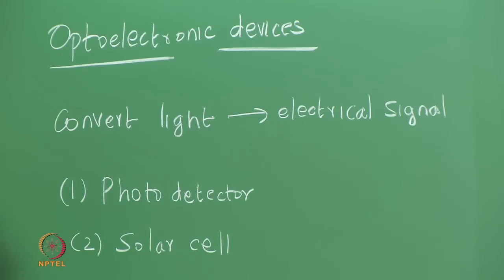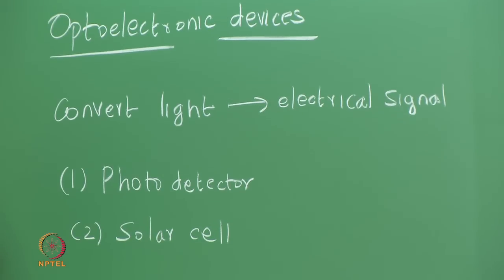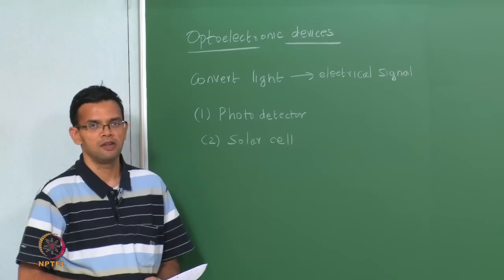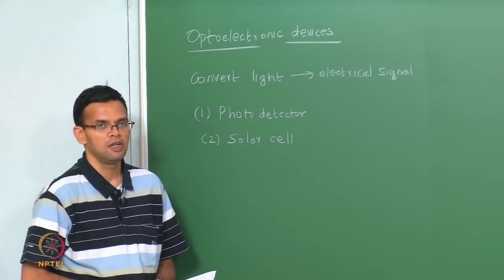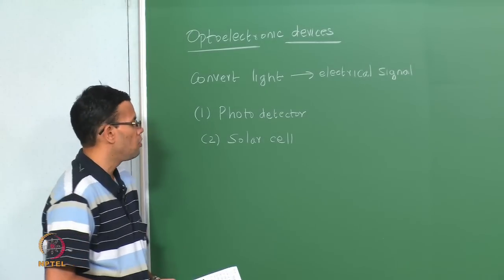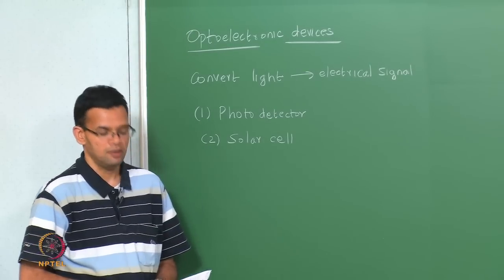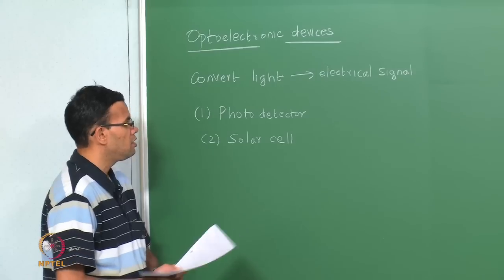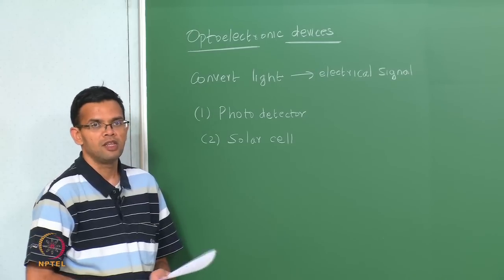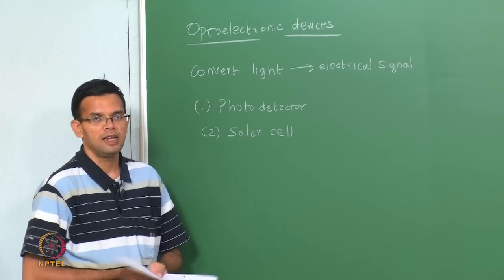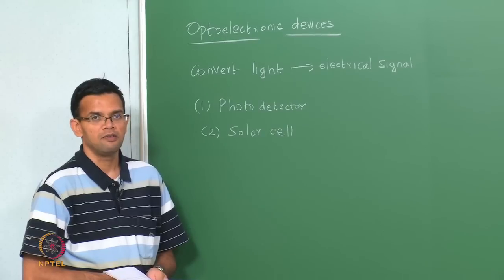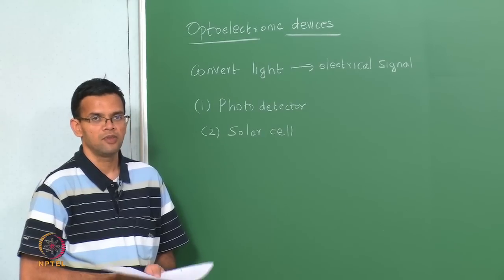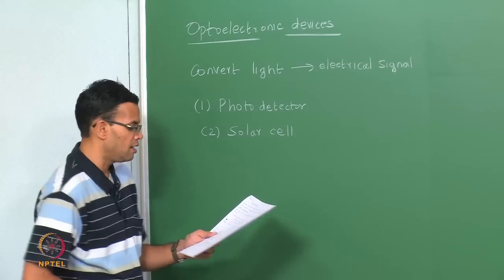Today we will start by looking at the photo detector, and as the name implies it basically detects incident photons or radiation. Tomorrow we will look at the solar cell. There are three steps involved when we think about shining light onto a device and then converting it into electrical current.